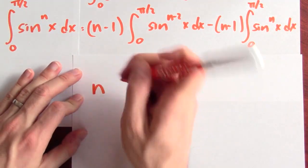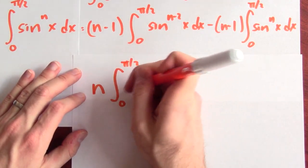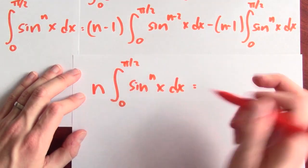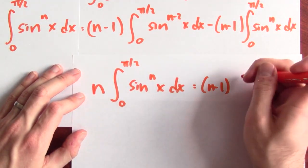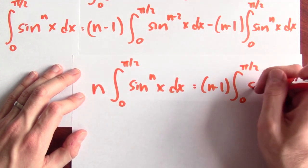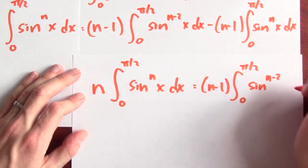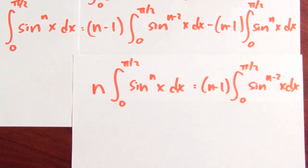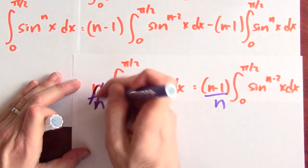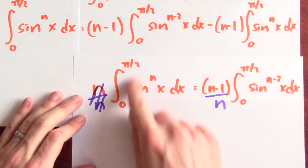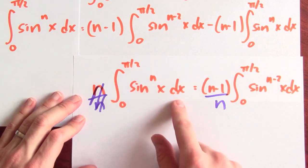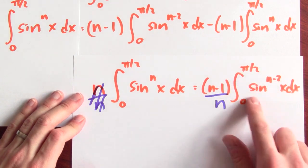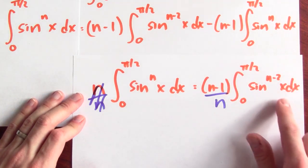Then I'll get n times the integral from 0 to pi over 2 of sine to the n x dx equals n minus 1 times the integral from 0 to pi over 2 of sine to the n minus 2 x dx. And if I divide both sides by n, I find that the integral from 0 to pi over 2 of sine to the n x dx is n minus 1 over n times the integral from 0 to pi over 2 of sine to the n minus 2 x dx.